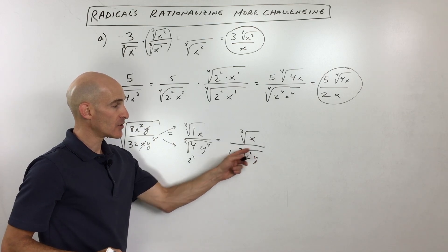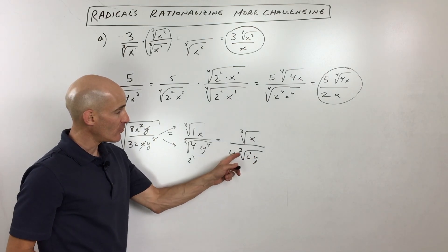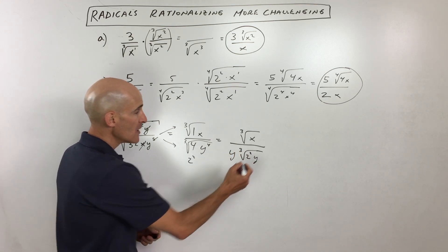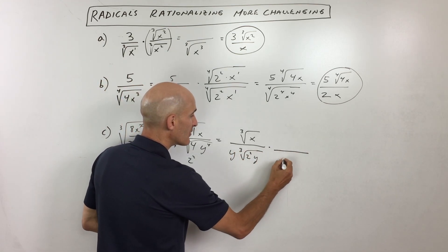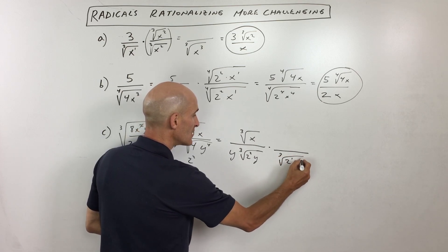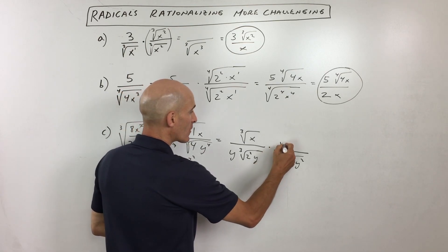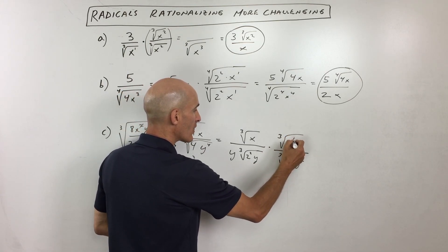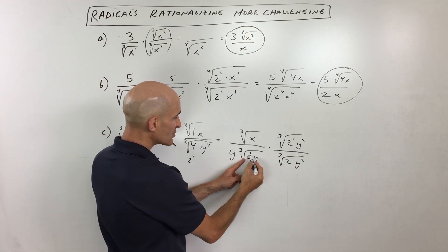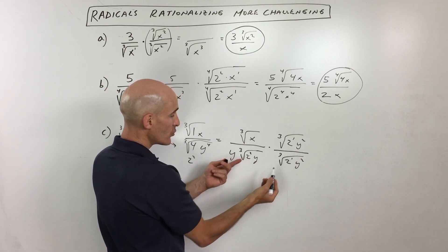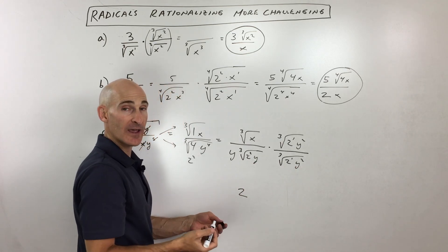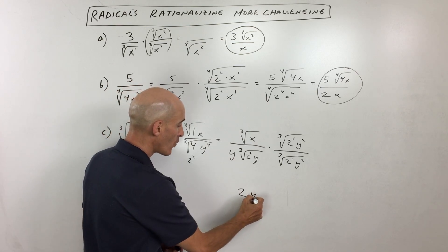But remember, our goal is to get rid of that radical in the denominator. We want to make sure we have groups of, or multiples of 3, since we're taking the cube root. So what I'm going to do is I'm going to multiply by the cube root of, we need another 2, and we also need 2 more y's. So whatever I do to the denominator, I'm going to do to the numerator. And so look what happens. This is going to give us 2 cubed, and the cube root of 2 cubed is just 2. We've got y cubed, the cube root of y cubed is y, times this y gives us y squared.